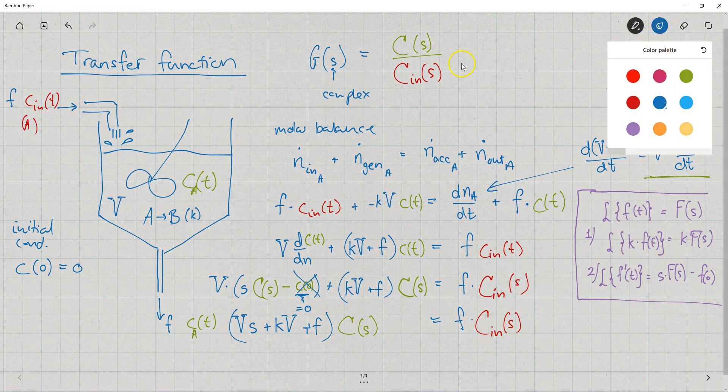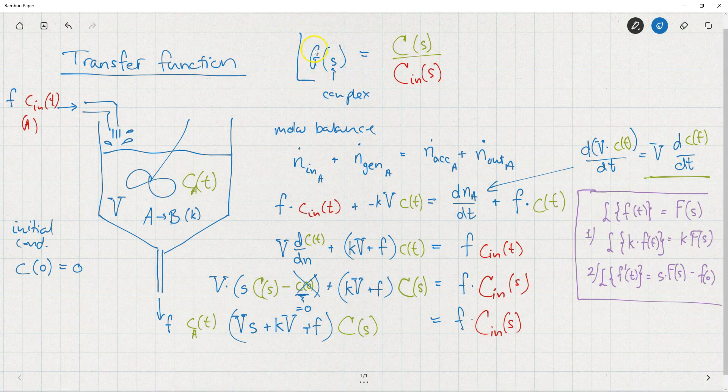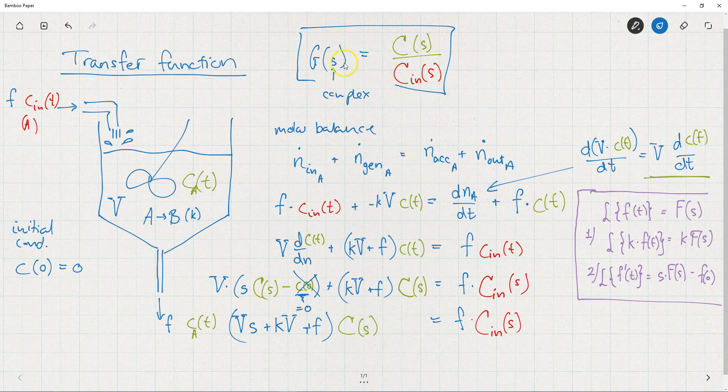What I'm going to do now, because what I really want to achieve is this transfer function here. I want this output here, my response, divided by my input. So all I have to do is isolate C of S. I'll just do that now. I just divide it by this term over here, and then I'll divide by C_in of S so that I get the transfer function.